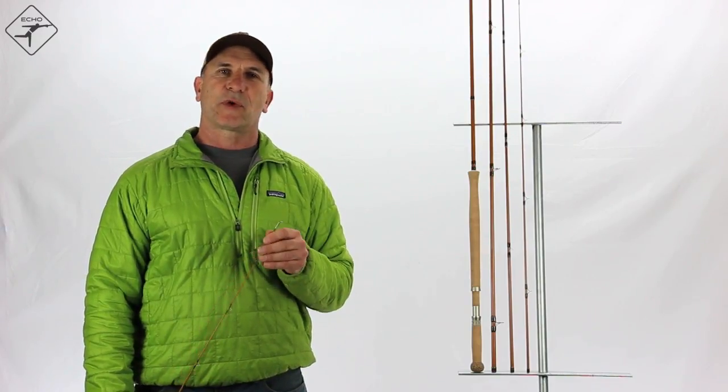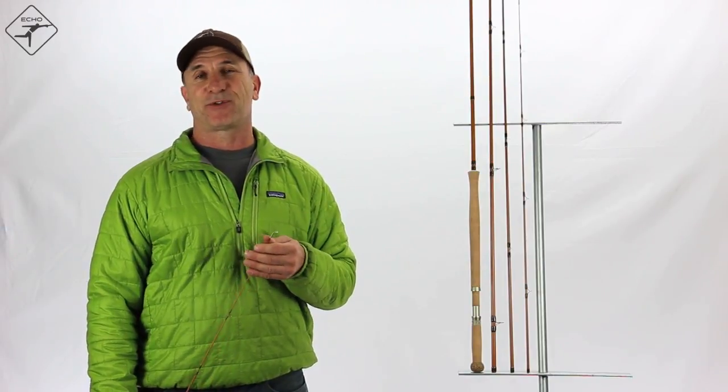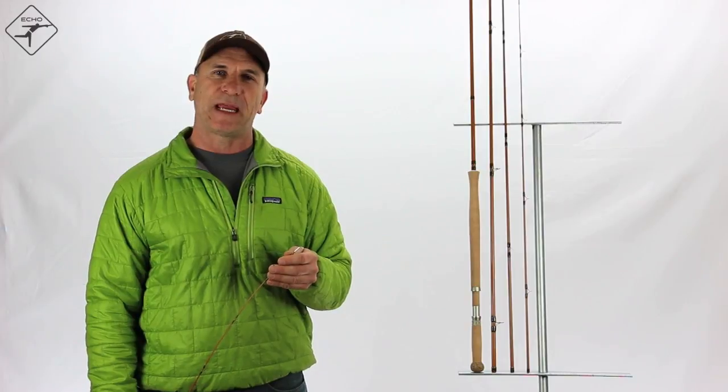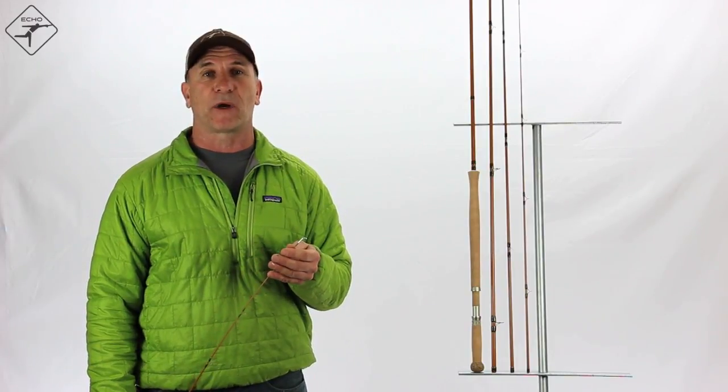With its lower stiffness and slower recovery rate, it turns out that glass fibers are a great material to use on a spay rod. They tend to be a little heavier in the hand, which translates into better rod awareness during the cast.